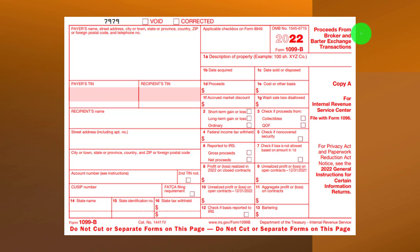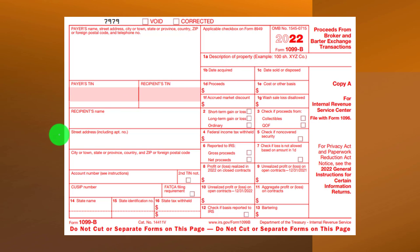Here is the 1099-B — the proceeds from broker and barter exchange transactions form. It might not look exactly like this from your broker, but it'll have the relevant boxes and numbers. This form comes from financial institutions or banks through which trading occurs. It includes the payer's TIN, recipient's TIN, recipient's name, address, the applicable checkbox on Form 8949, description of property, shares of the property, and the amount that was sold.